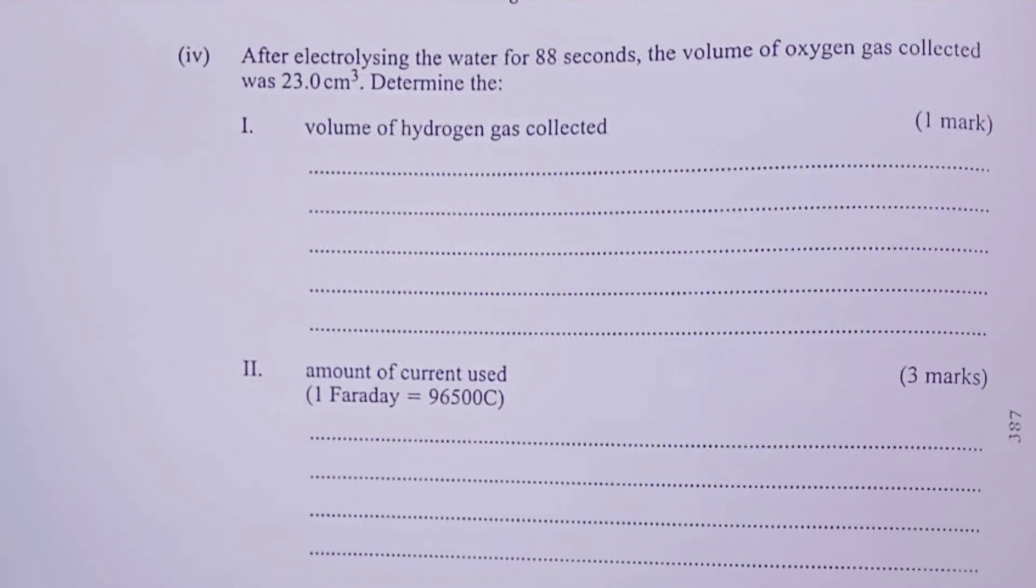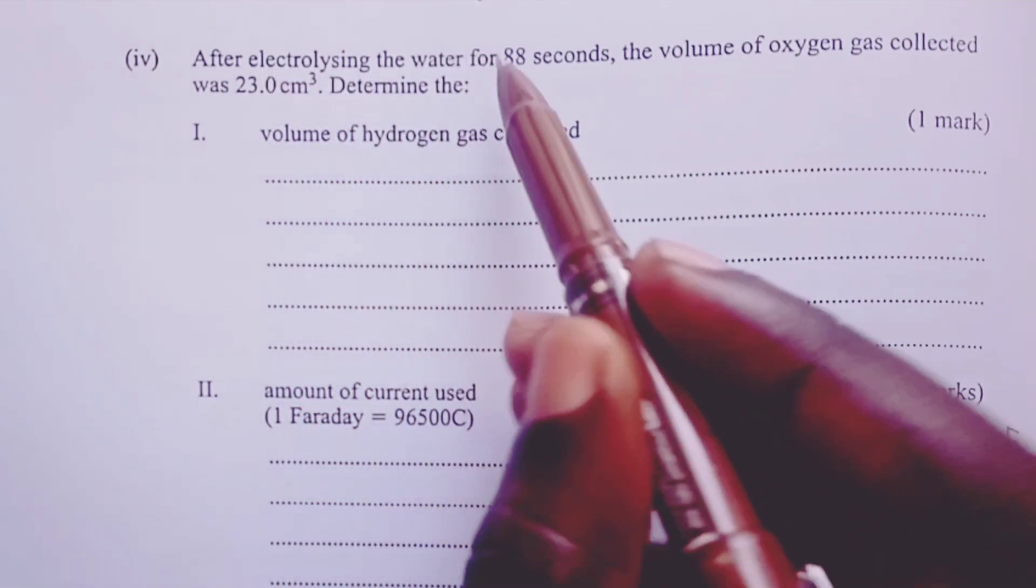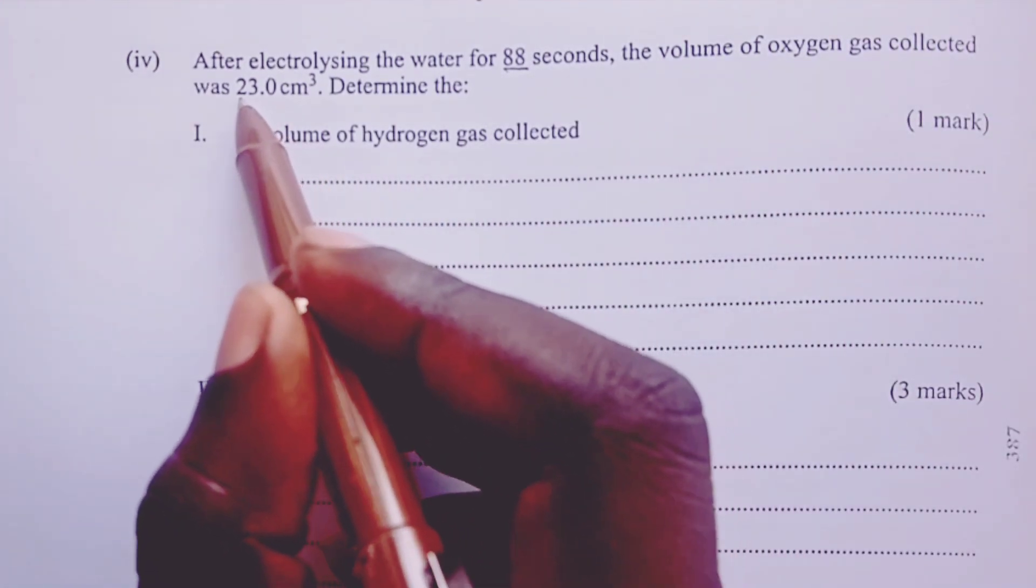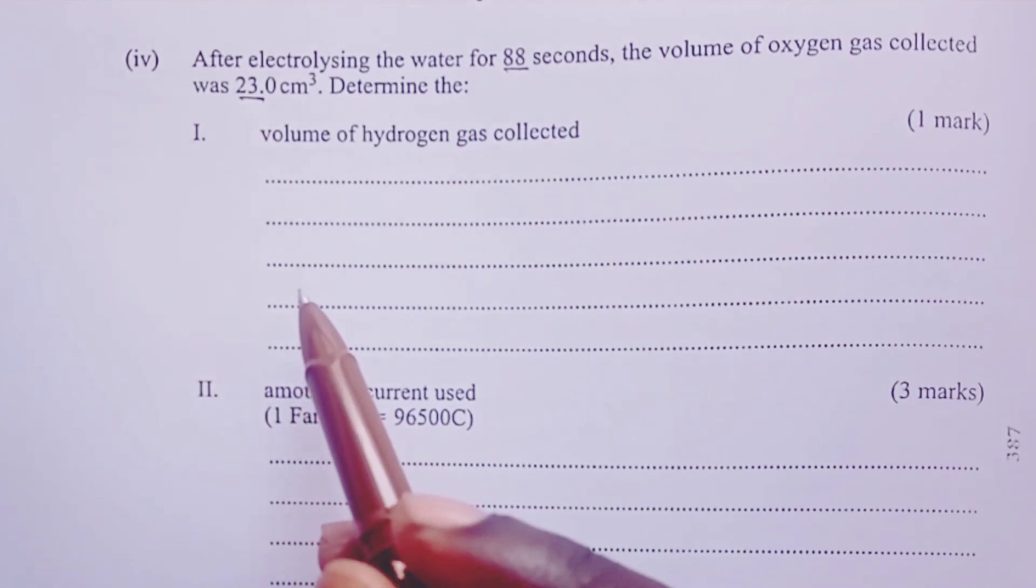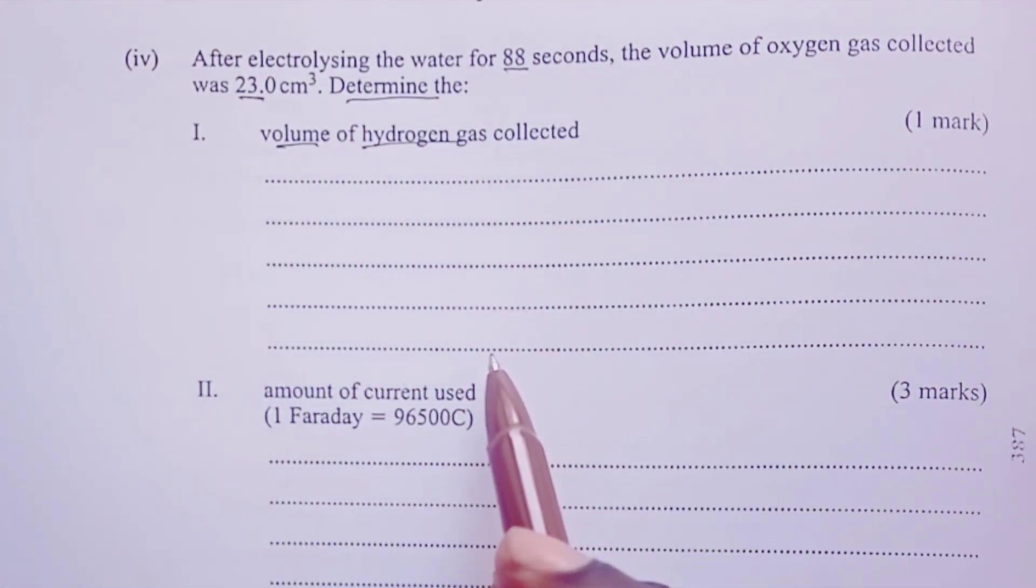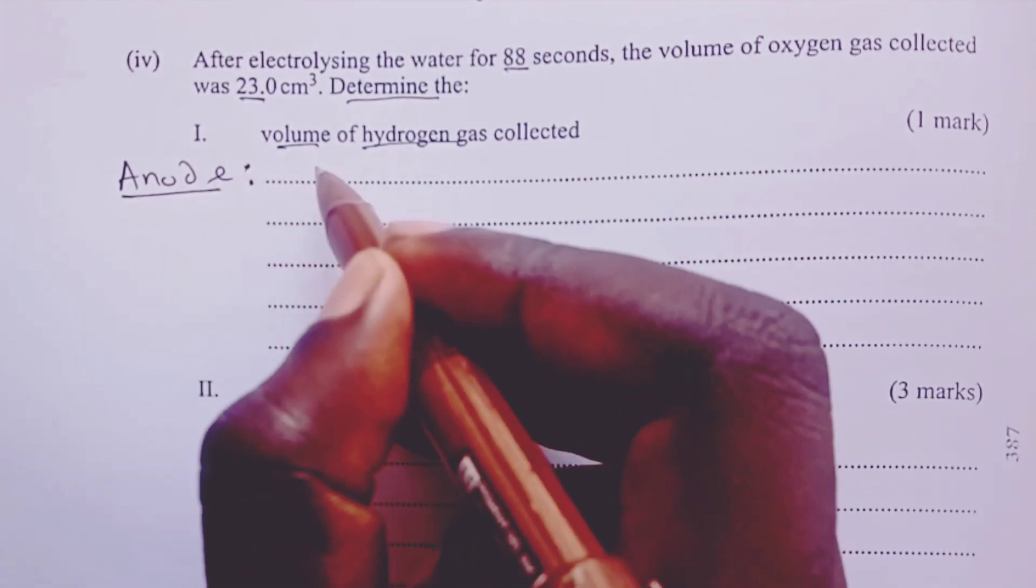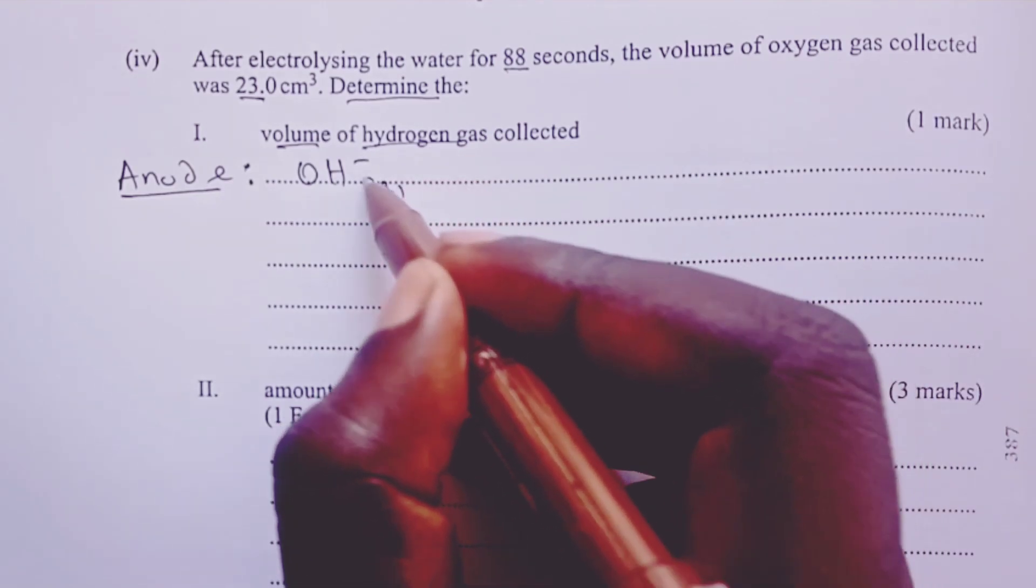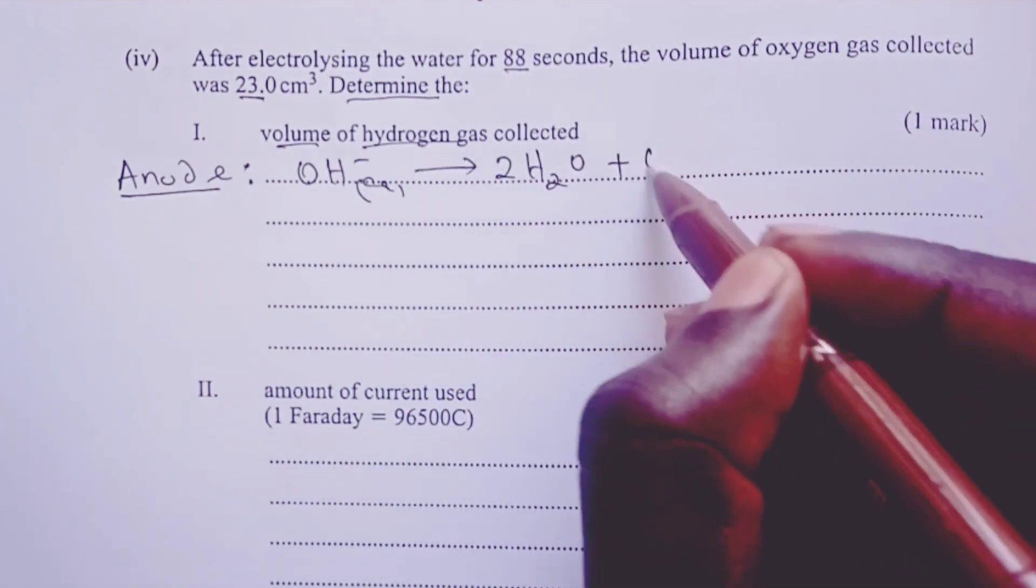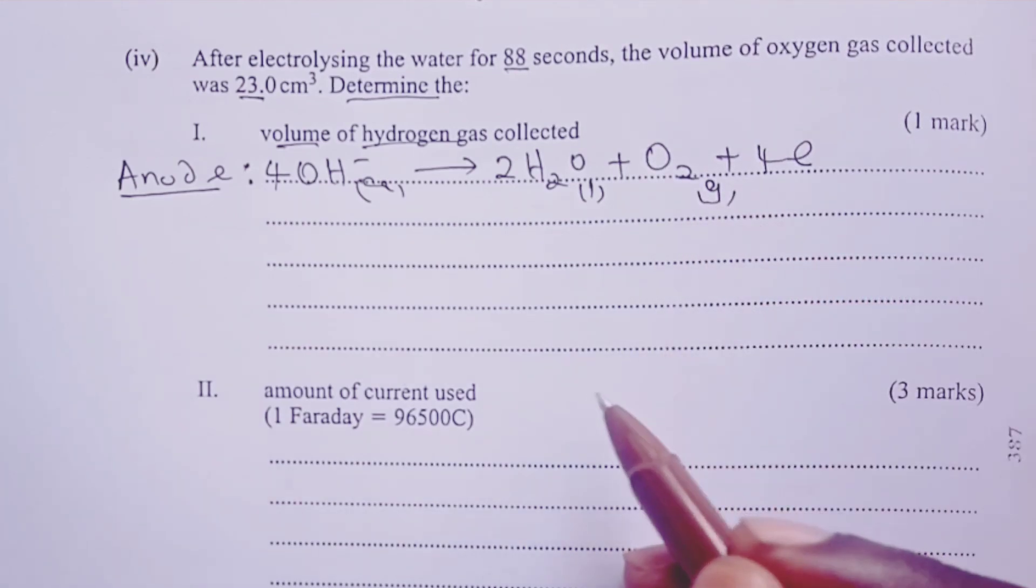We proceed now to Roman 4. Roman 4 is stating that after electrolyzing the water for 88 seconds, the volume of oxygen gas collected was found to be 23 cubic centimeters. So we are now being asked to determine the volume of hydrogen gas that would be collected at the cathode. So here, the candidate should have known that at anode, we usually discharge hydroxyl ions to give water, actually 2 moles of water, 1 mole of oxygen, and 4 moles of electrons, just as we have discussed in the previous question.